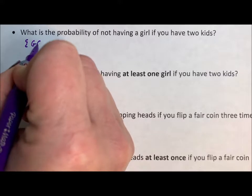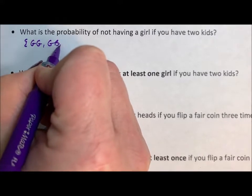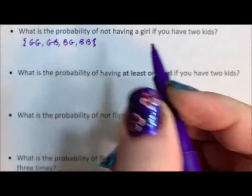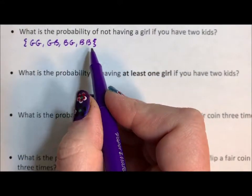We can have girl-girl, girl-boy, boy-girl, boy-boy. So there's four outcomes.